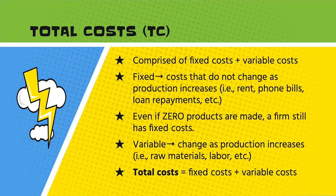If you make zero products, you're still paying those fixed costs. Variable costs are the things that will change as you make more production — you're going to need more raw materials, possibly an additional factory or workspace, and more labor. So total costs — which you'll probably never have to calculate — would be the fixed costs plus the variable costs for your firm.